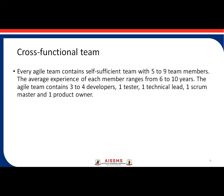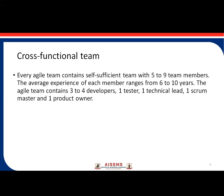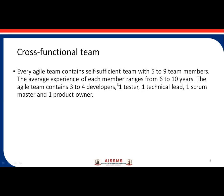The next topic is the cross-functional team. Every Agile team is a self-sufficient team with five to nine team members working on one sprint. It is self-sufficient because it contains developers, testers, and a technical leader — all in one. The average experience of each team member ranges, and the Agile team contains three to four developers, one tester, one technical lead, one Scrum Master, and one Product Owner — forming a self-sufficient cross-functional team.